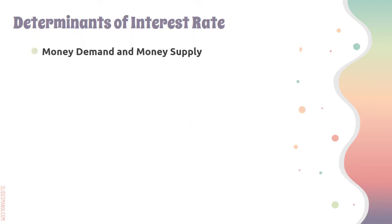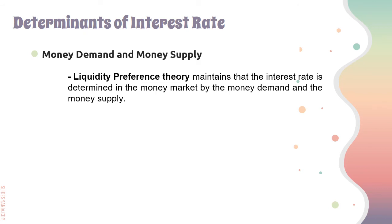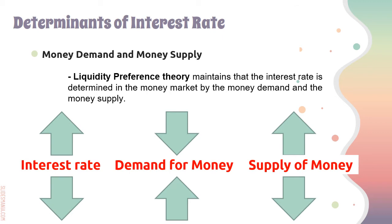Next, we have money demand and money supply, supported by the liquidity preference theory. In 1930, John Maynard Keynes introduced the concept of money demand and used the term 'liquidity preference' for money demand. This theory stipulates that the interest rate is determined in the money market by money demand and money supply. When interest is high, demand for money is low and supply of money is high. Conversely, when interest rate is low, demand for money is high and supply of money is low. The relationship between interest and demand is inverse, and the relationship between interest rate and supply is direct.